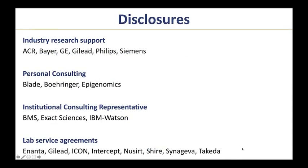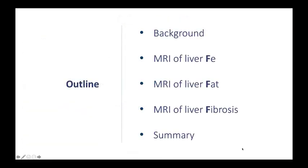My disclosures are shown on this slide, and here is an outline of my talk. I'll begin with some brief background material, and during that background I'll explain that chronic liver disease can be characterized by several histologic abnormalities, of which three can be assessed by quantitative MRI in the year 2020. These three, the so-called three Fs — iron, fat, and fibrosis — are the topics of today's lecture. After that brief background, I'll dive deeper into MRI of liver iron, MRI of liver fat, and MRI of liver fibrosis, and then I will summarize what we have talked about.